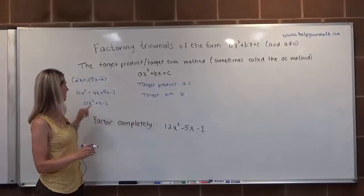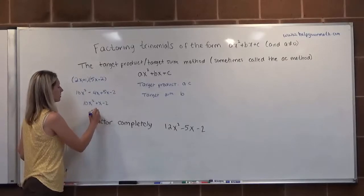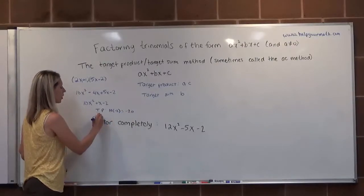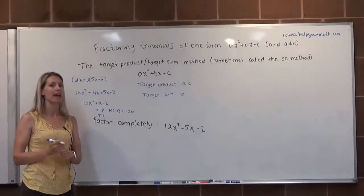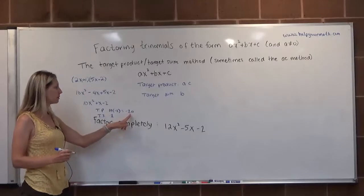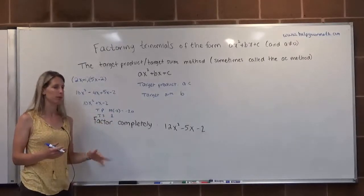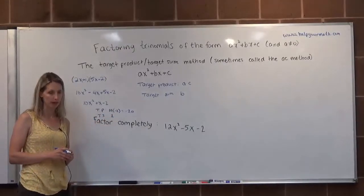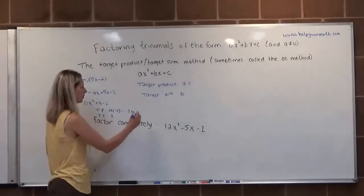Going back to our example 10x squared plus x minus 2, the target product is A times C: 10 times negative 2 equals negative 20. The target sum is B, and since there's no number in front of x, we assume it's 1. So we want two numbers that multiply to negative 20 and add up to 1. Always start by checking the two numbers you just used: does 10 plus negative 2 equal 1? No, so that's not the winning combination.